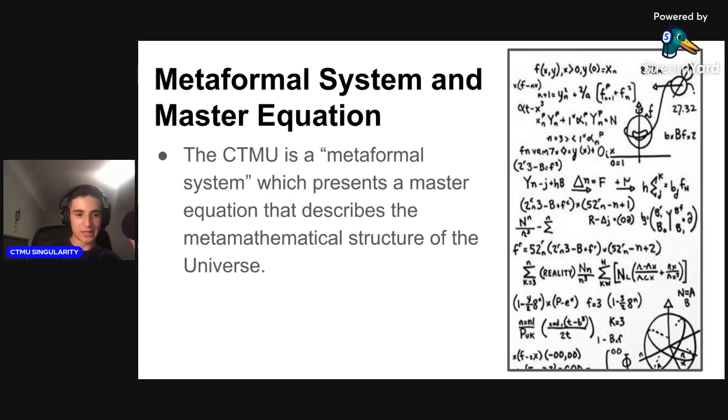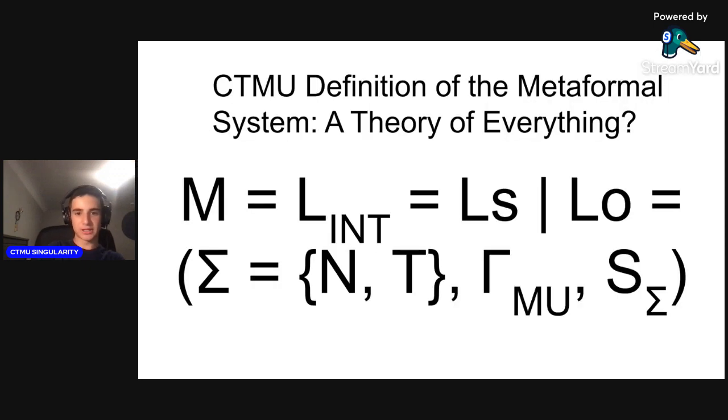The metaformal system can be reduced to a master equation which briefly describes the metamathematical structure of the universe: M = L_INT = Ls | Lo = (Σ = {N, T}, Γ_MU, S_Σ). M is a meta-language, or equivalently the metalinguistic or metaphysical identity of reality, which equals L_INT, an intrinsic language through which the universe exists and evolves. SCSPL and reality are two ways of referring to the same thing. Reality is a recursive, self-calling language that is fractal and natural and reflective of the structure of heaven and earth at all levels.